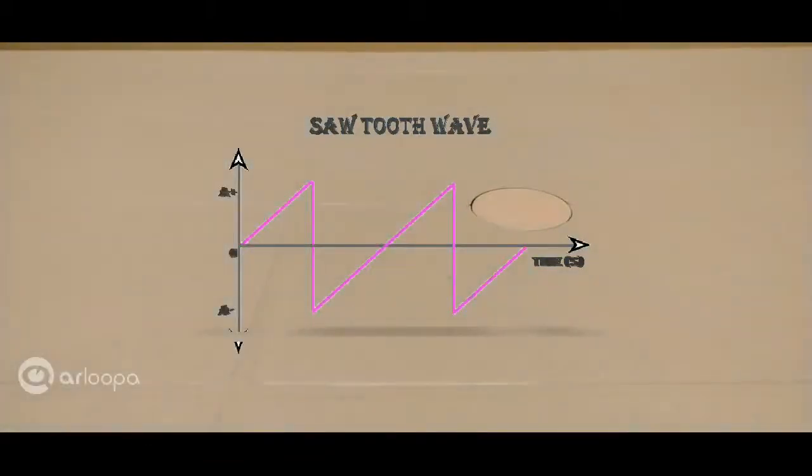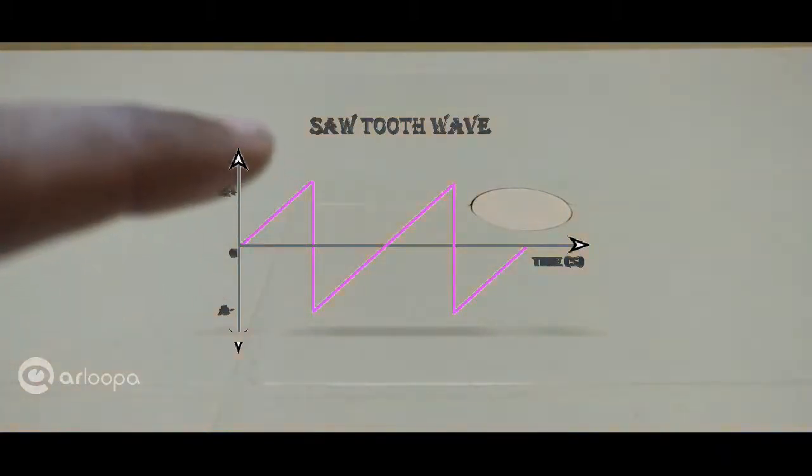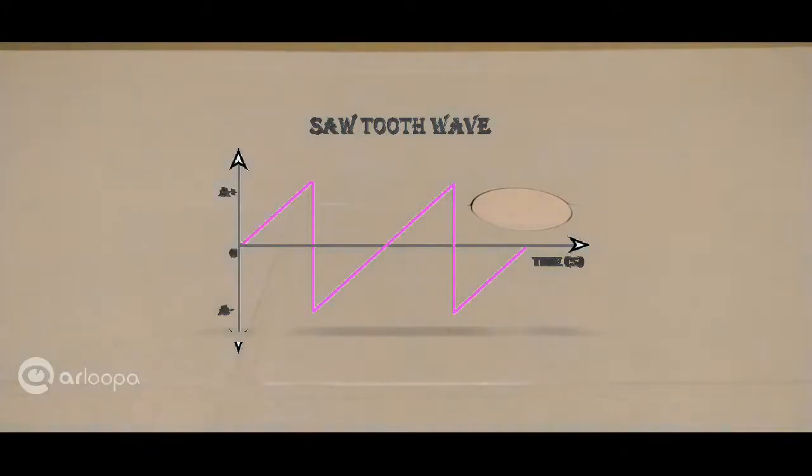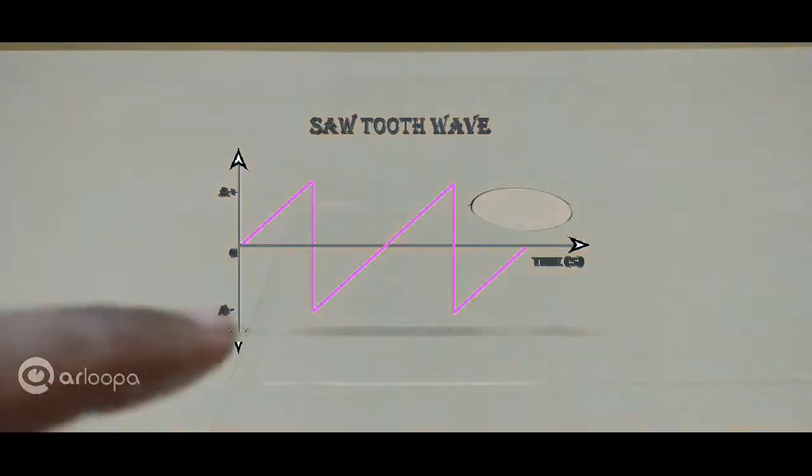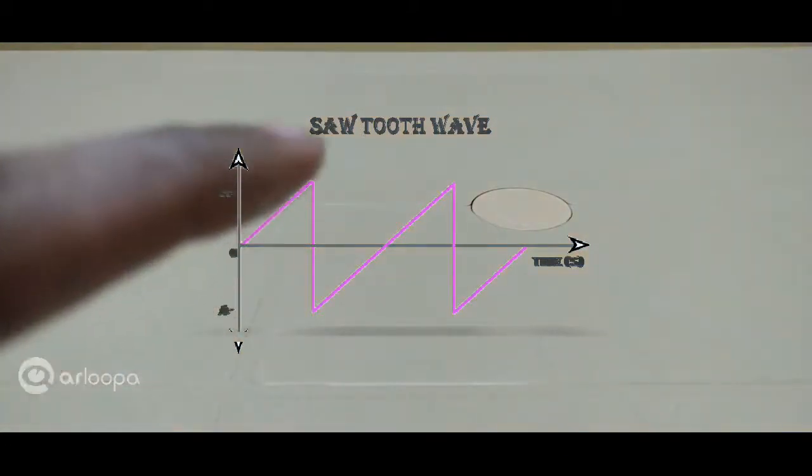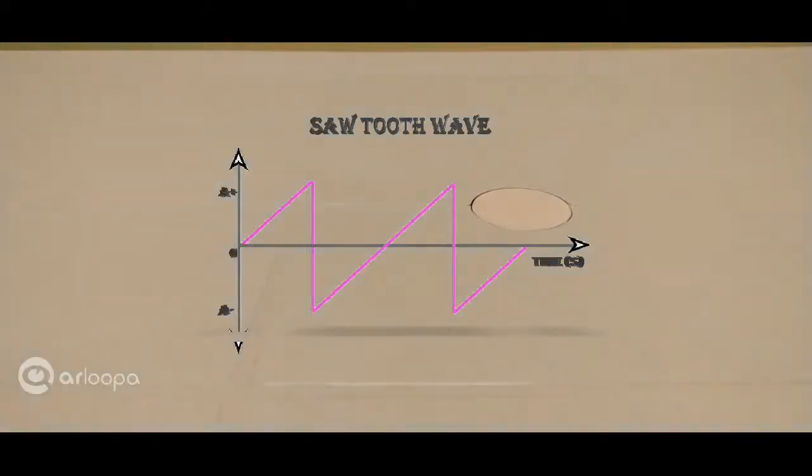A sawtooth wave is also called a ramped waveform because it ramps up gradually and then drops down. Colloquially, it is also referred to as a mixture of triangle and square waves because it resembles the linear gradual rise of a triangle wave and the sharp drop of a square wave.